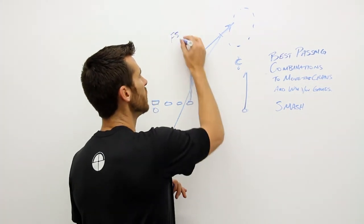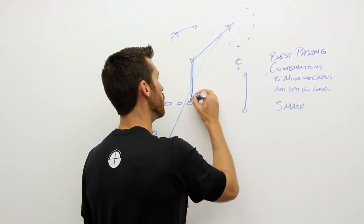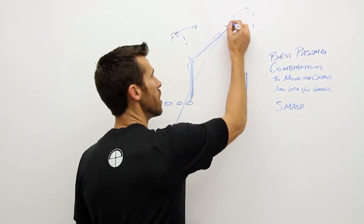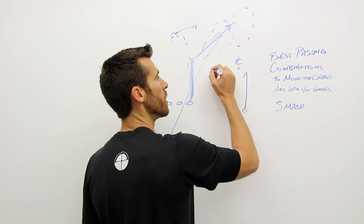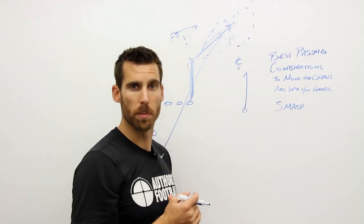We hold the free safety so he can't come over on it. We hold him with a good vertical route, we bend that in to threaten his seam or his post, and that gives us a great space to hit that route right here in this window and not way out here over the top of that corner where he can make a play.